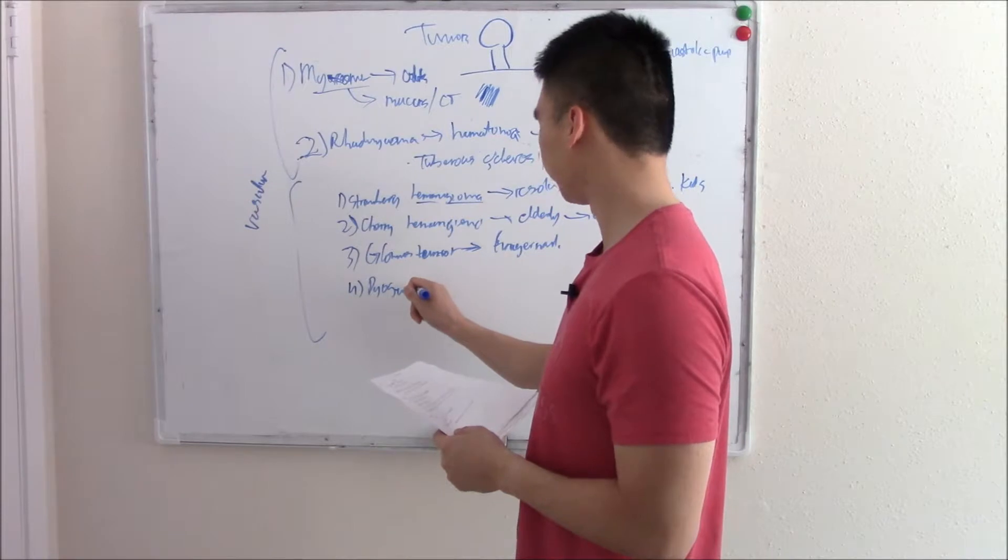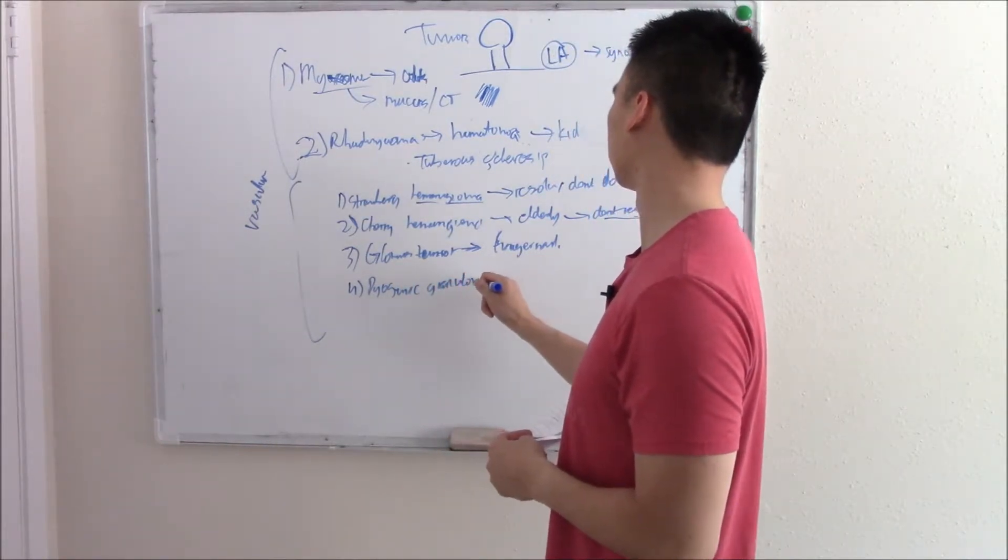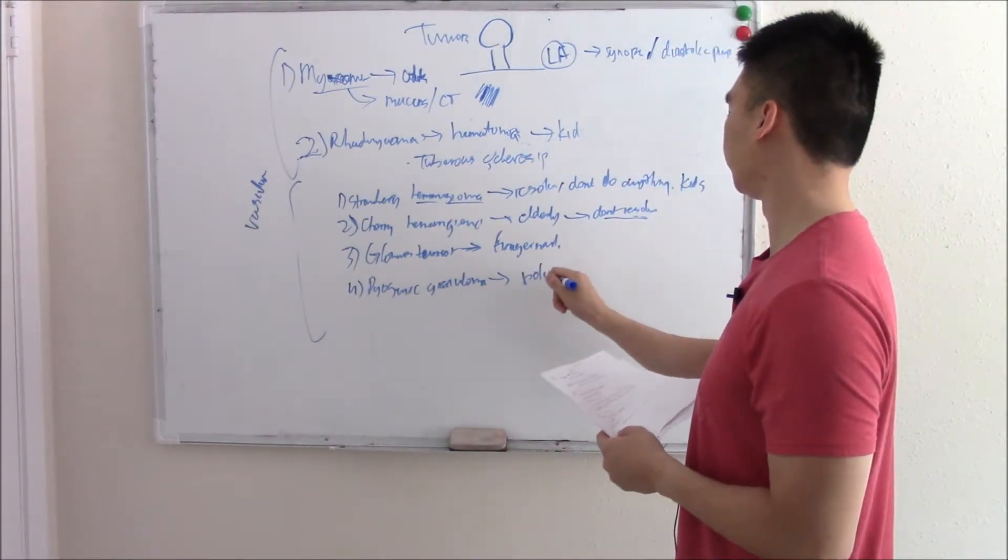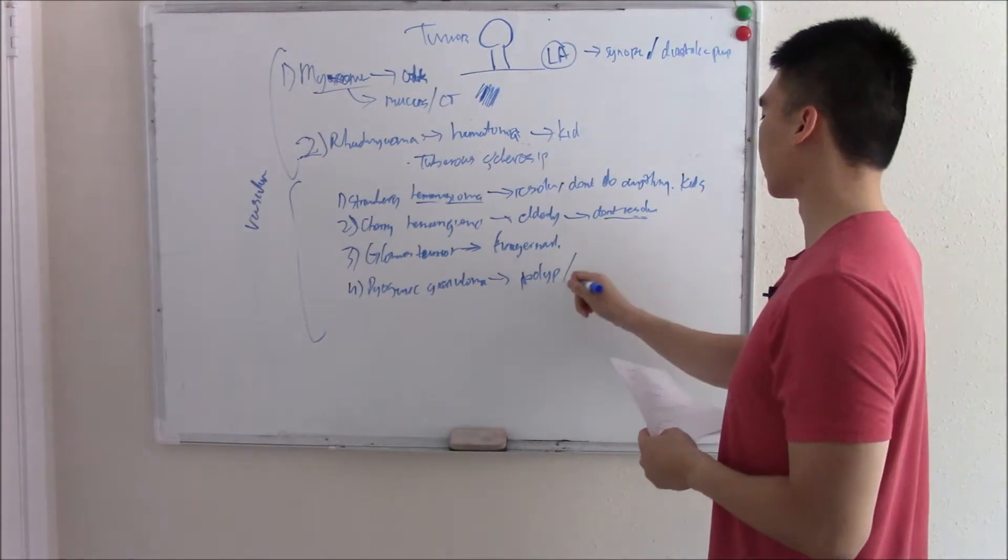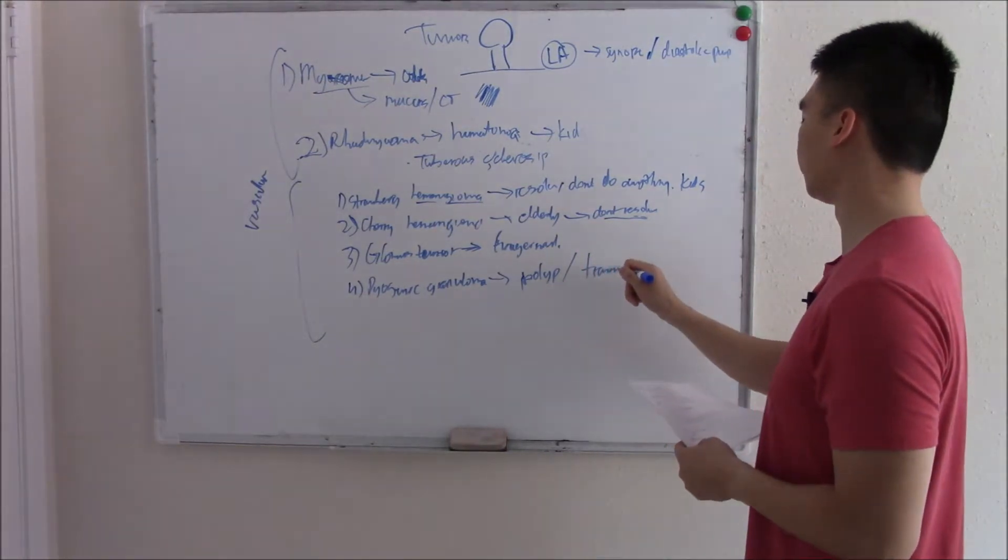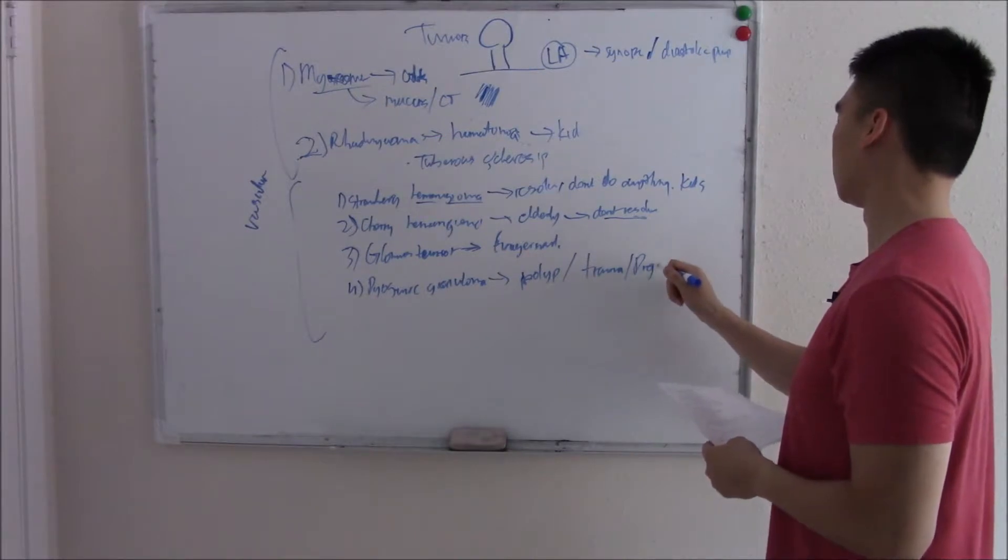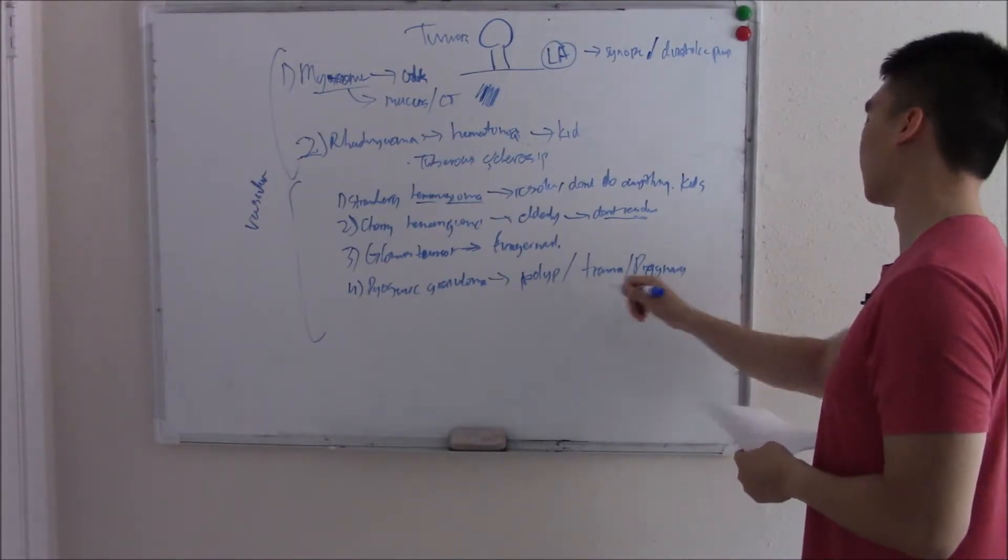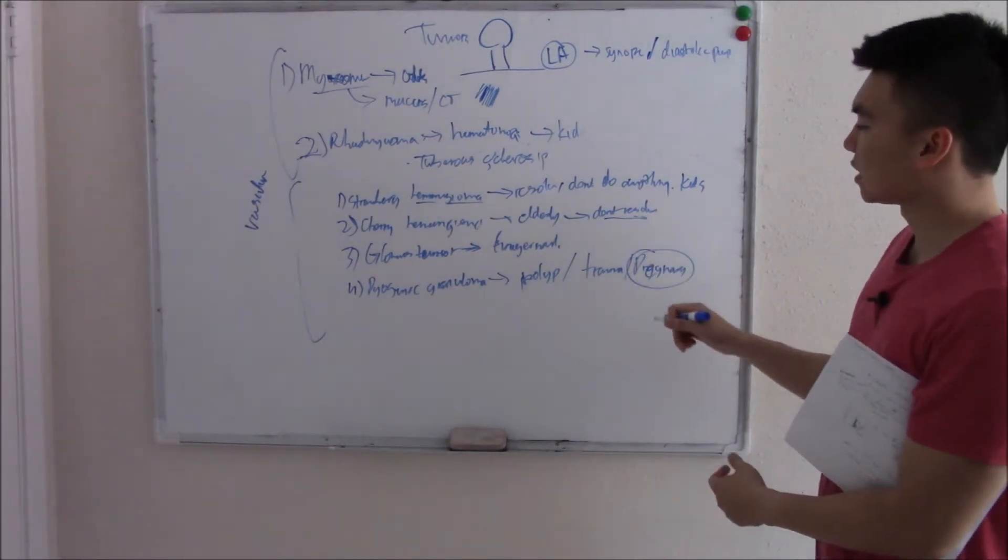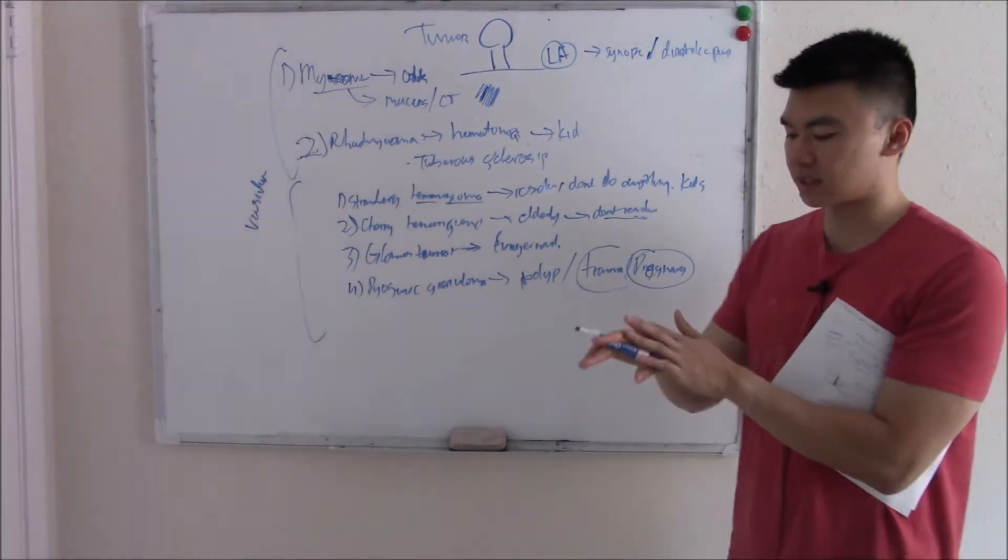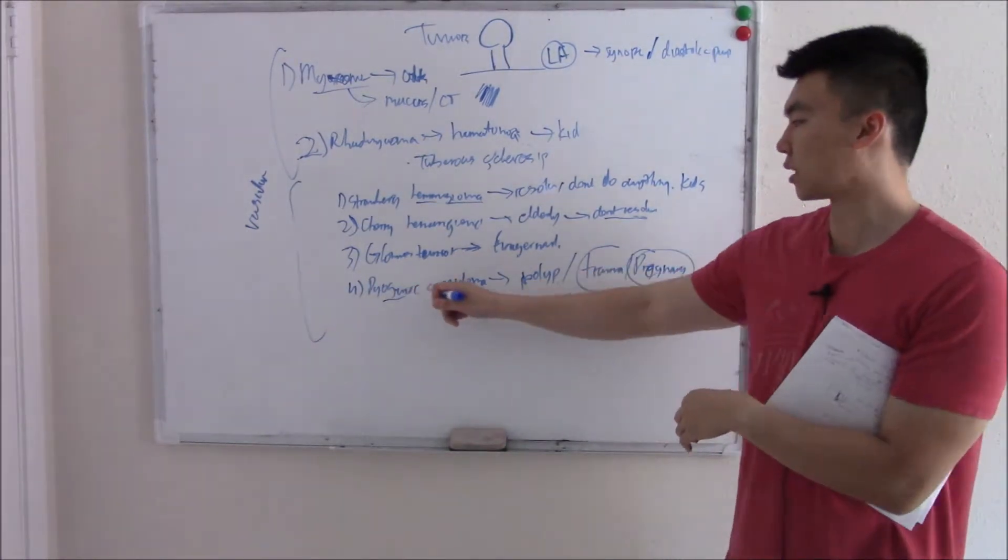Pyogenic granuloma. This is a little polyp that is associated with things like physical trauma and hormones. So you see it in pregnancy. The hormones part, that's why it shows up in pregnancy. The physical trauma part, if someone has like constant irritation of their finger and then grows this little polyp. Pyogenic granuloma.